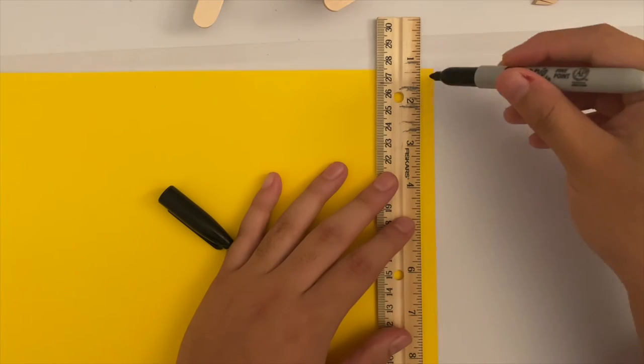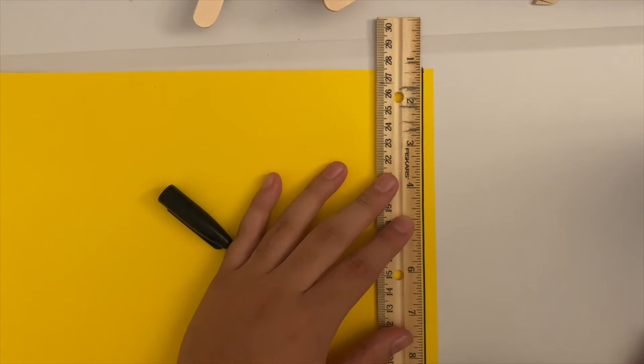Now go ahead and grab a piece of construction paper and make an outline on it as shown. You will be making two outlines that will both be cut out.